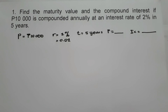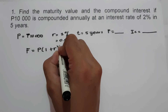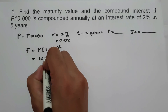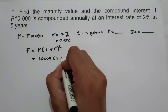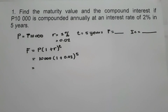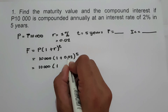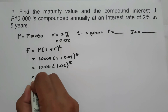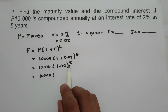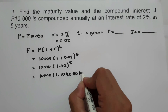So to find the future value, we are going to use the formula F equals principal times 1 plus R raised to T. Let us substitute: principal is 10,000 times the quantity of 1 plus rate 0.02 raised to 5. Then 1 plus 0.02 equals 1.02 raised to 5. So we have 10,000 times 1.02 raised to 5, which equals 1.1040808032.